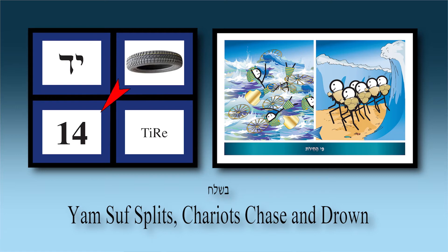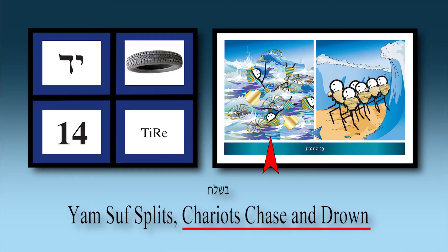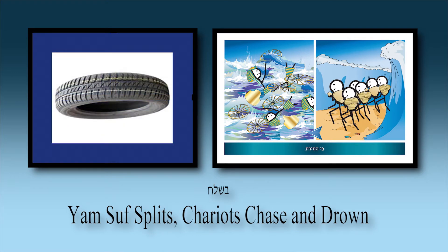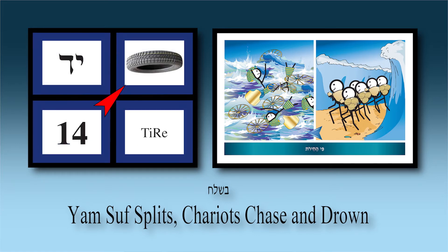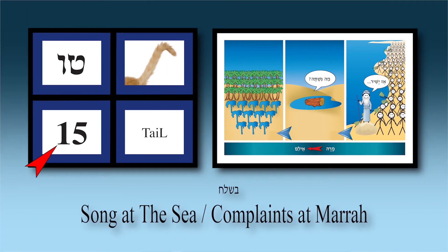Chapter fourteen — 'tyre': Klal Yisrael arrive at Pi HaChirot and the Yam Suf splits. Klal Yisrael crosses over and the Egyptians drown. In the picture you can see the Yam Suf splitting and the Egyptians drowning. The funny association: a giant tyre splitting the sea, and the tyres of the Egyptian chariots burning and melting. Of course it was actually split by the wind of HaKadosh Baruch Hu — but the funny tyre reminds you: Tyre 14 = Keriat Yam Suf.